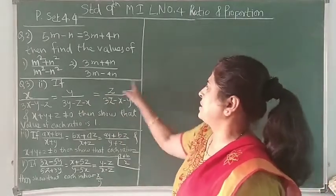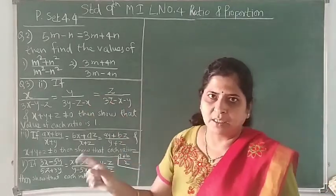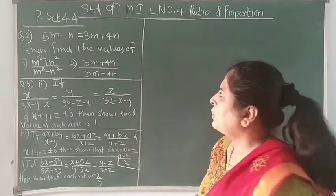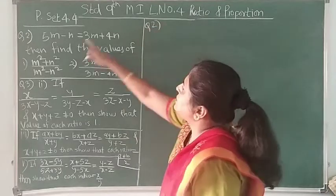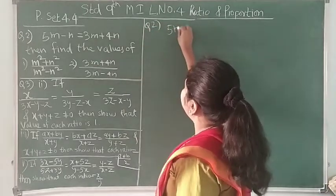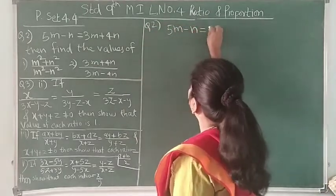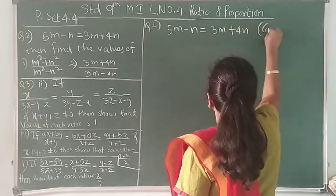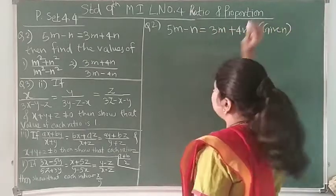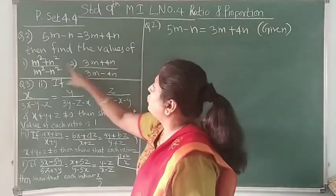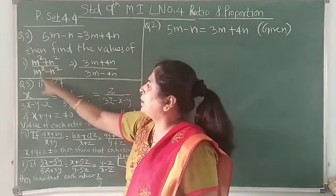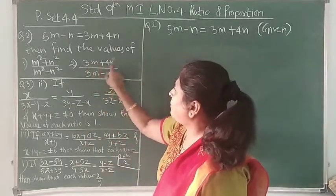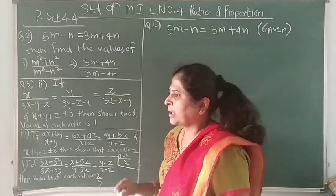Why did I choose specifically these 3 questions? I will certainly tell you. But before that, let's complete question number 2. In question number 2, what is given to us? It is given to us that 5m minus n is equal to 3m plus 4n. And from this given value, we have to find the value of m² plus n² upon m² minus n², or the other expression 3m plus 4n upon 3m minus 4n.